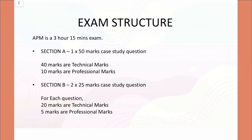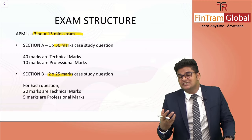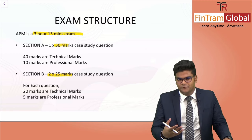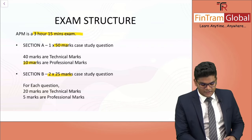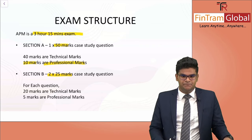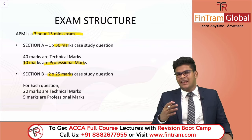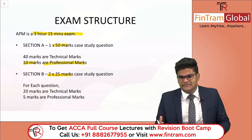When we talk about the exam structure, the APM exam is still 3 hours and 15 minutes. We have two sections — Section A and B. In Section A, we have one 50-mark case study question. In Section B, we have two 25-mark case study questions. However, the only difference is in the structure of the marks. In Section A, out of those 50 marks, 10 marks will now be professional marks.